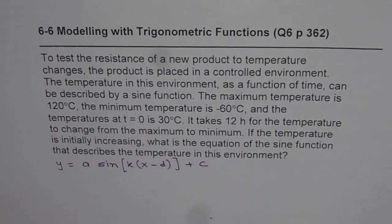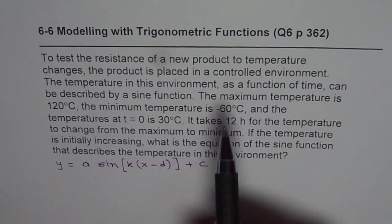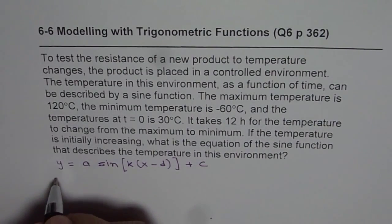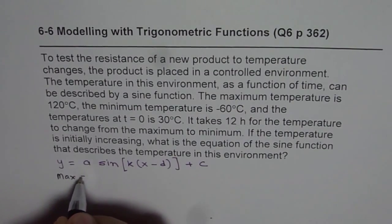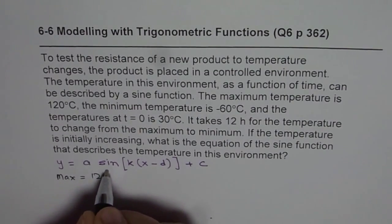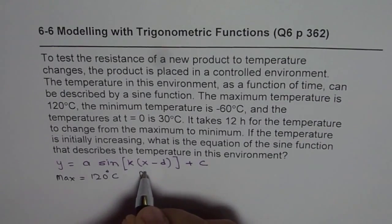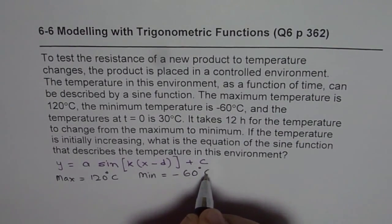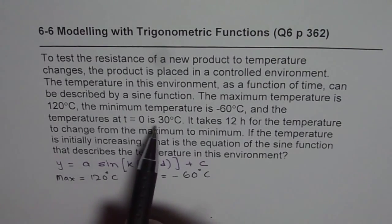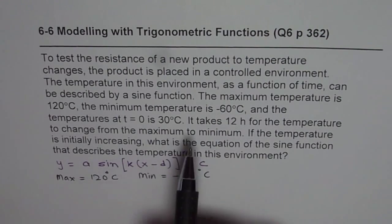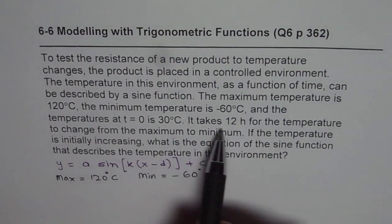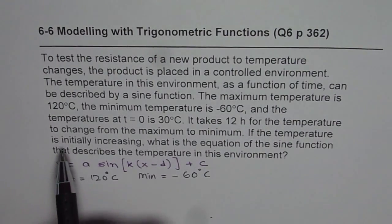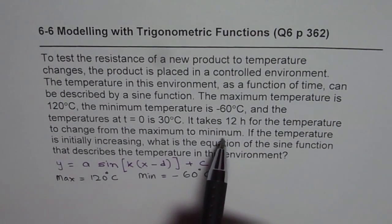In the question, what are we given? We are given maximum temperature of 120 degrees Celsius, minimum equals minus 60 degrees Celsius, T₀ is 30, and it takes 12 hours for the temperature to change from maximum to minimum.